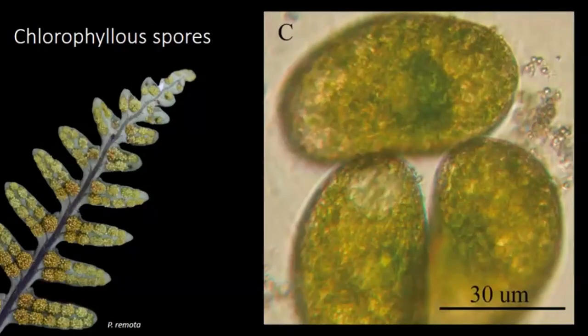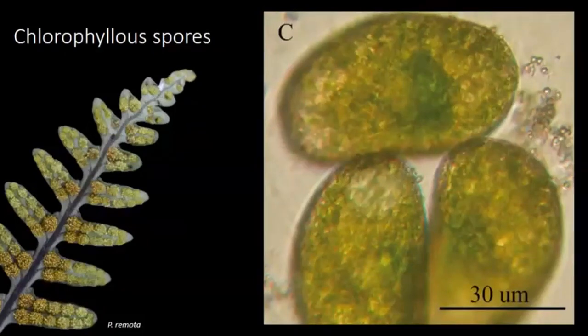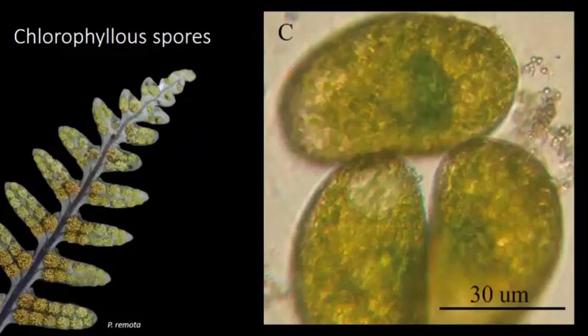Another really fun adaptation found frequently in Pleopeltis is chlorophyllous spores. Most ferns produce spores without chlorophyll and they usually appear yellow or brown. However, about 14% of fern species produce chlorophyllous or green spores. These green spores usually germinate in less than three days and have much shorter viability than normal yellow spores. This shorter dormant period is hypothesized to be associated with successful colonization of new habitats. We estimate that about 15 to 30% of Pleopeltis species have chlorophyllous spores — here you can see the green spores of Pleopeltis remota.